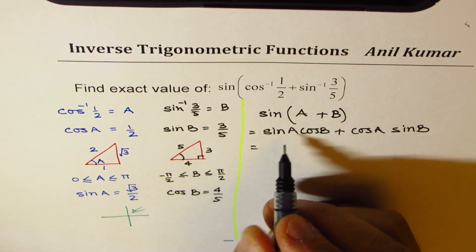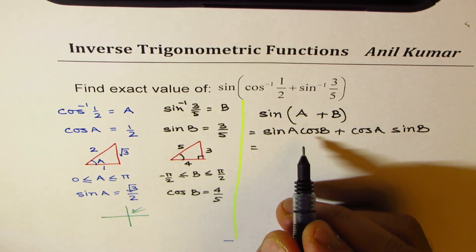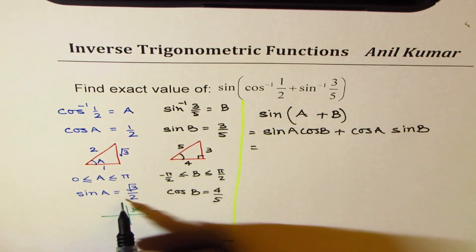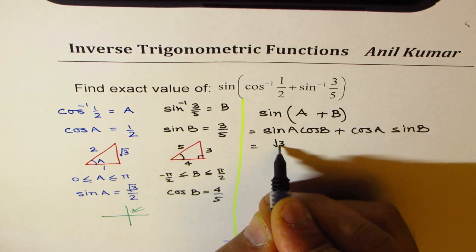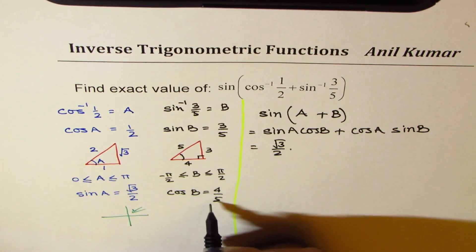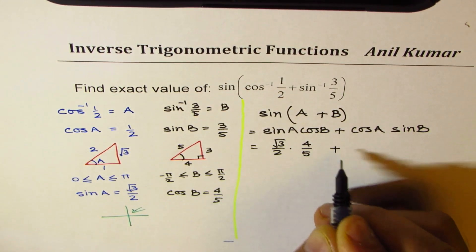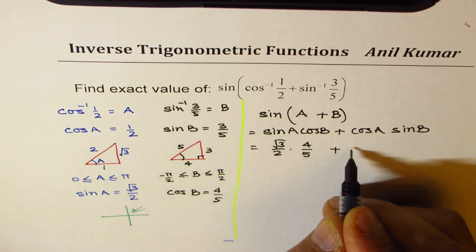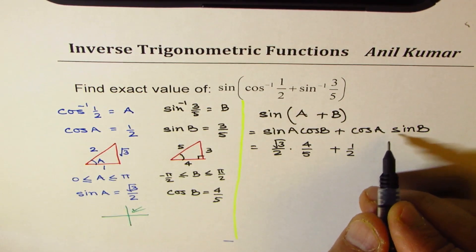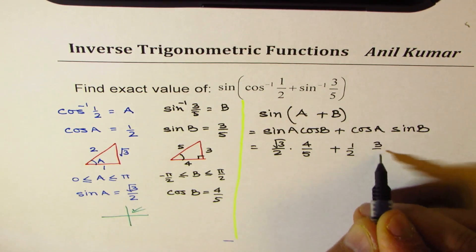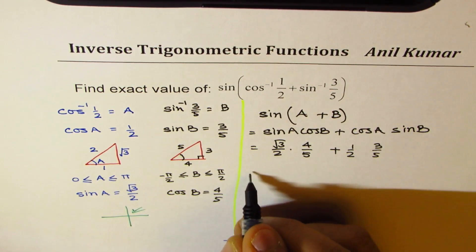Now we know the values of sine A cos B. Let's substitute them. Sine A is square root 3 over 2. Cos B is 4 over 5. Plus cos A is half. And sine B is 3 over 5.